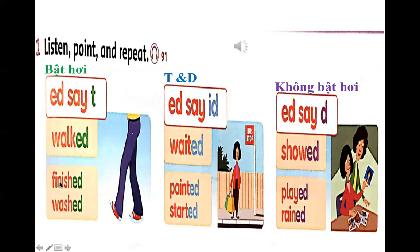Tiếp theo là từ 'finish' — các bạn thấy một luồng hơi bật rất mạnh. Finish — thì chúng ta đọc là 'finished'. Tương tự với từ 'wash' — washed. Các bạn không đọc là 'finish-id' hay 'wash-id'. Nhớ những từ bật hơi thì chúng ta đọc là /t/. Với những từ tận cùng là chữ T hoặc D thì đọc là /ɪd/: waited, painted, started. Các bạn đọc là 'wait-id', 'paint-id', 'start-id'.